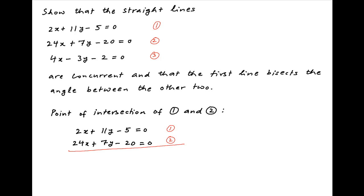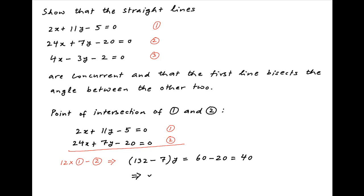Subtracting the second equation from 12 times the first equation, we get on the left hand side 132 minus 7y equal to 60 minus 20, which is equal to 40. Therefore y is equal to 40 divided by 125, which is equal to 8 upon 25.